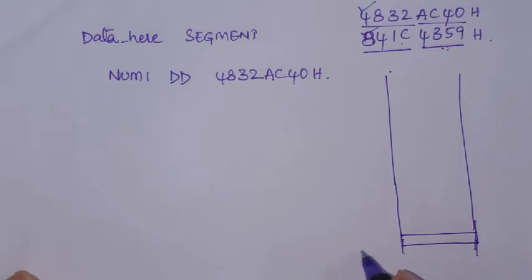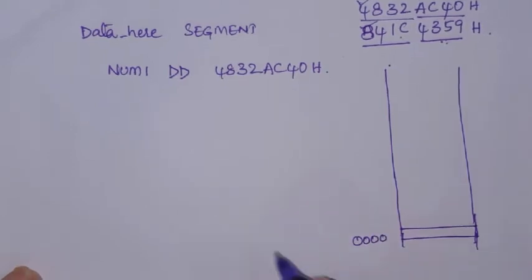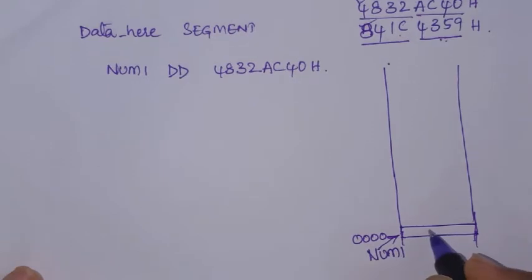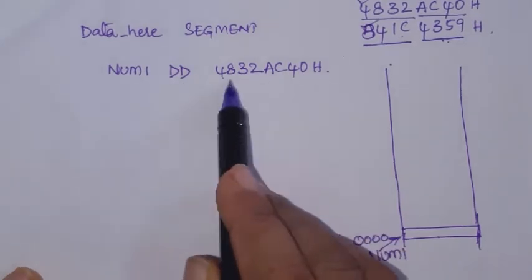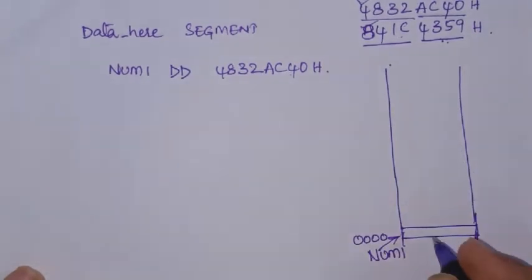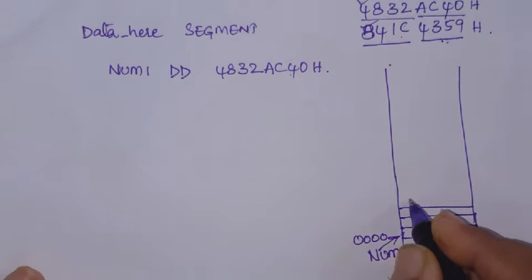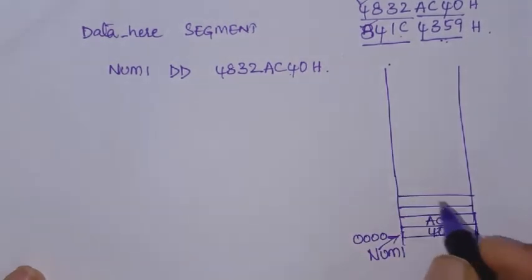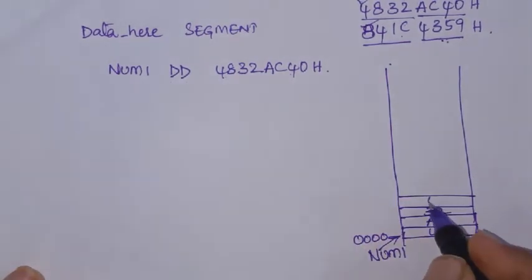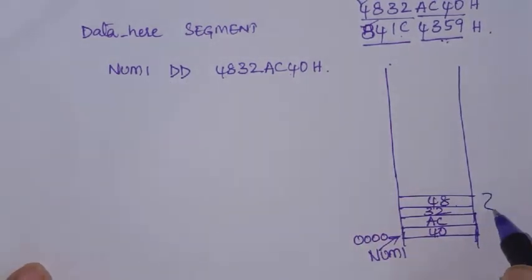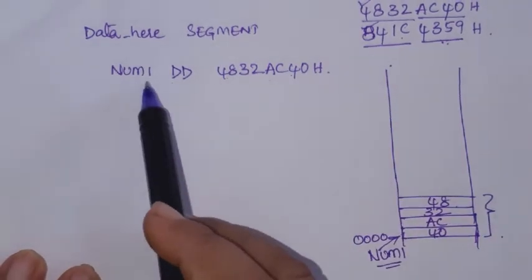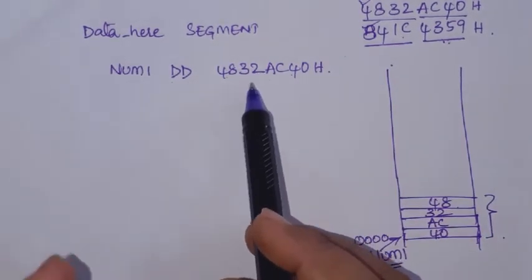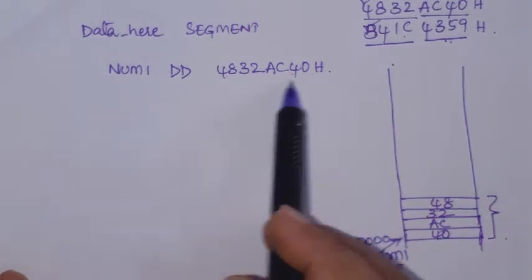It starts from 000. The location counter will be zero. This location is given the name 'number one'. Because you are declaring it as a double word, the low byte is stored in the low address. So 40 is stored here, then AC, then in the next location 32, and in the next location 48. This is how number one is stored when the assembler converts it — this is not execution, this is the conversion to binary codes.